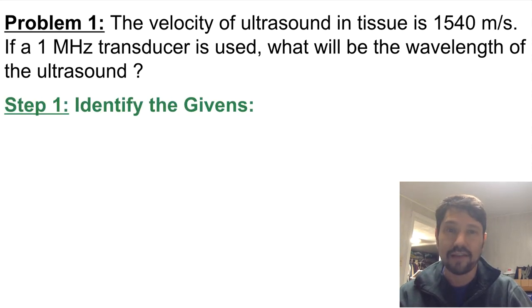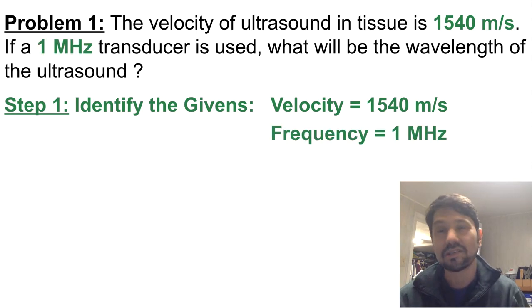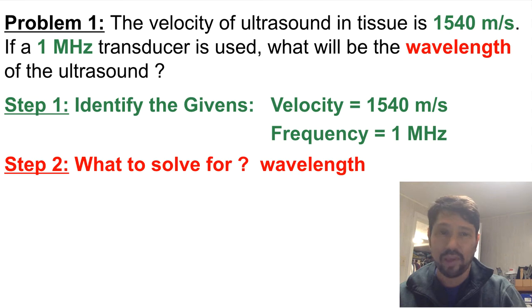First we'll identify our givens: the velocity is given right in the problem as well as the frequency, which is a little trickier to see. But you see megahertz, you see hertz, you know frequency is always expressed in hertz or one over seconds. So what are we solving for? We're solving for wavelength.